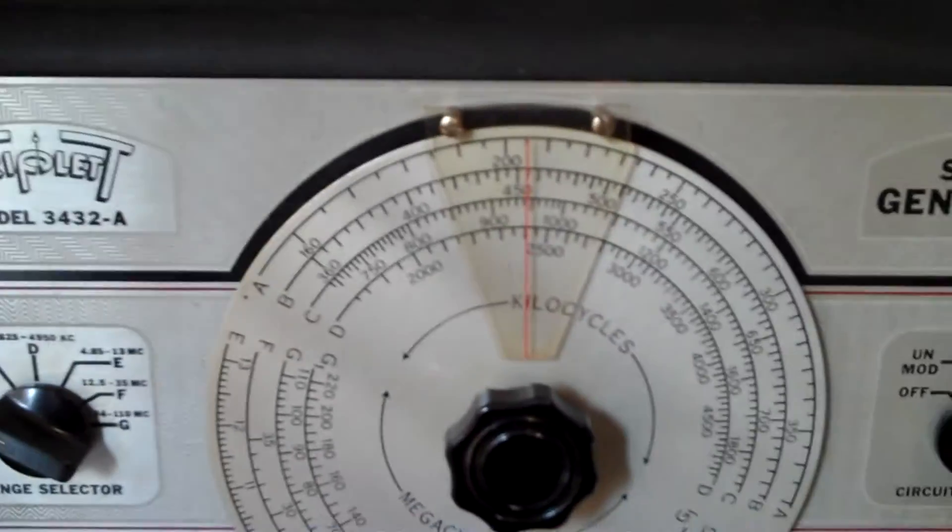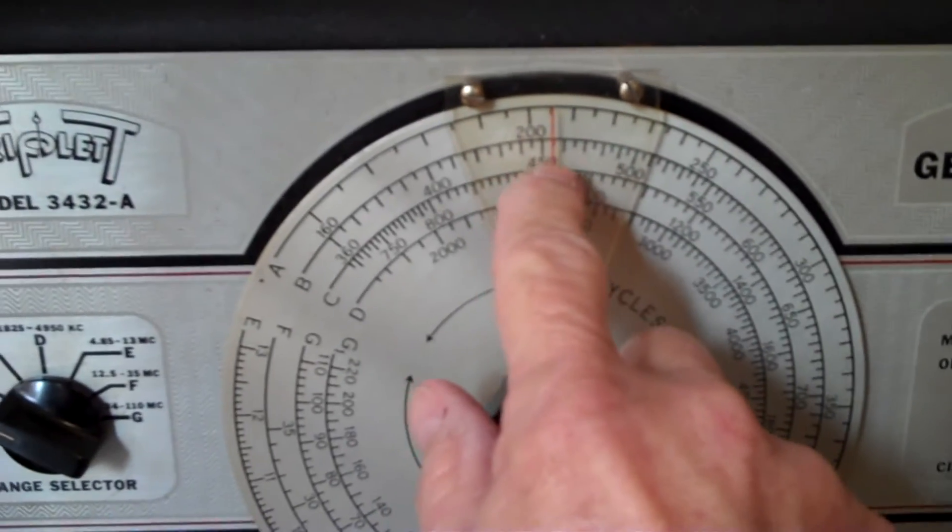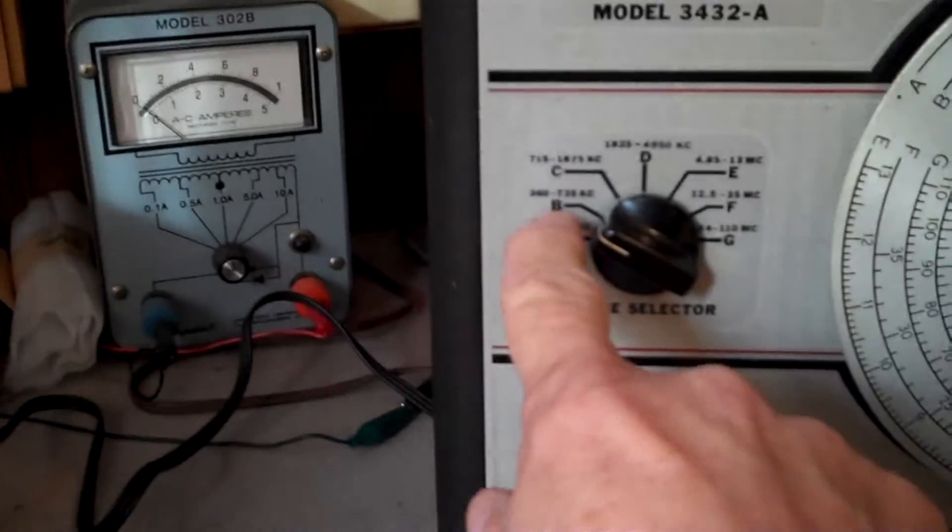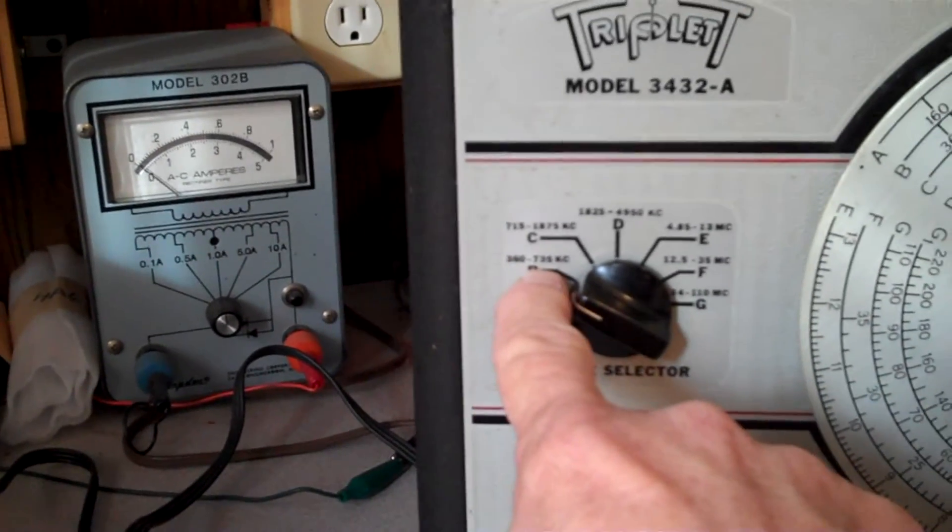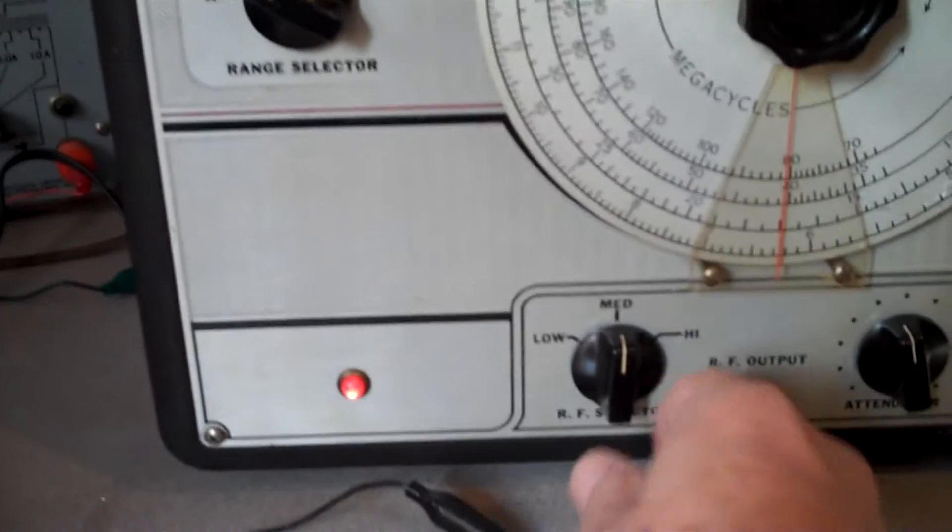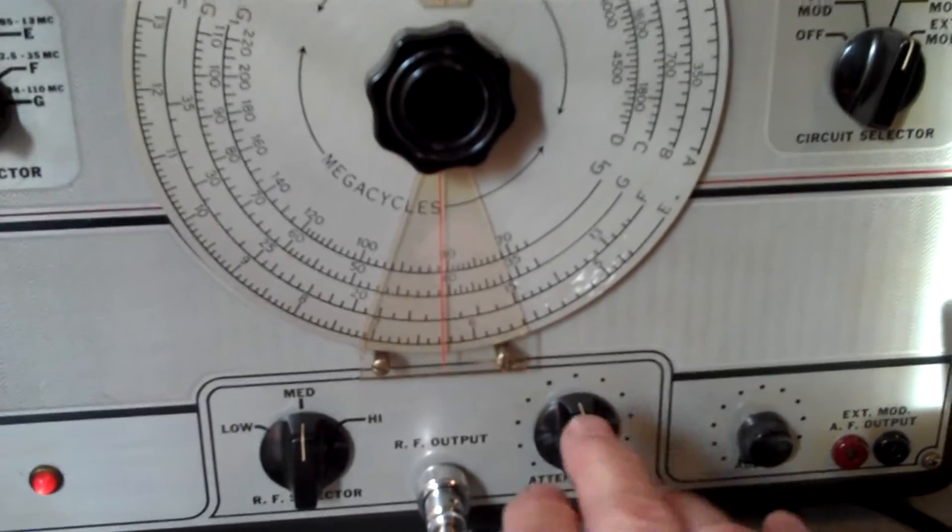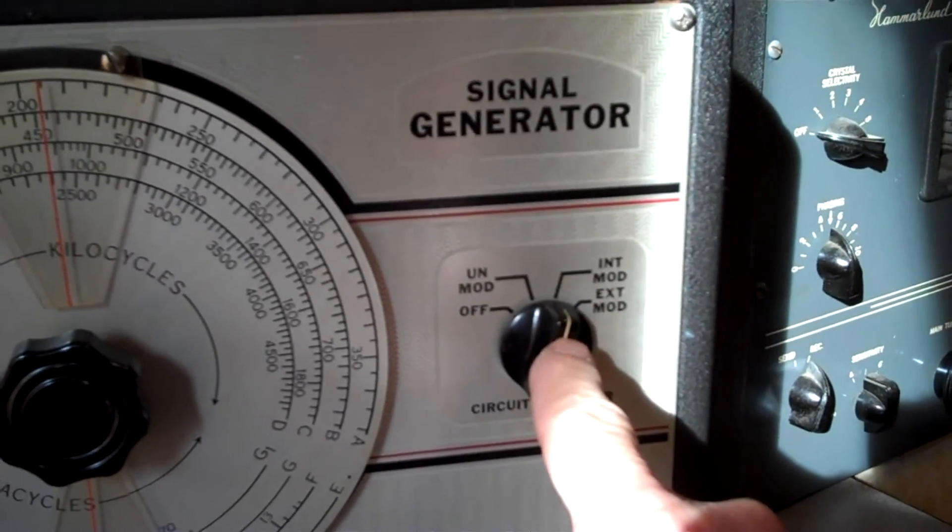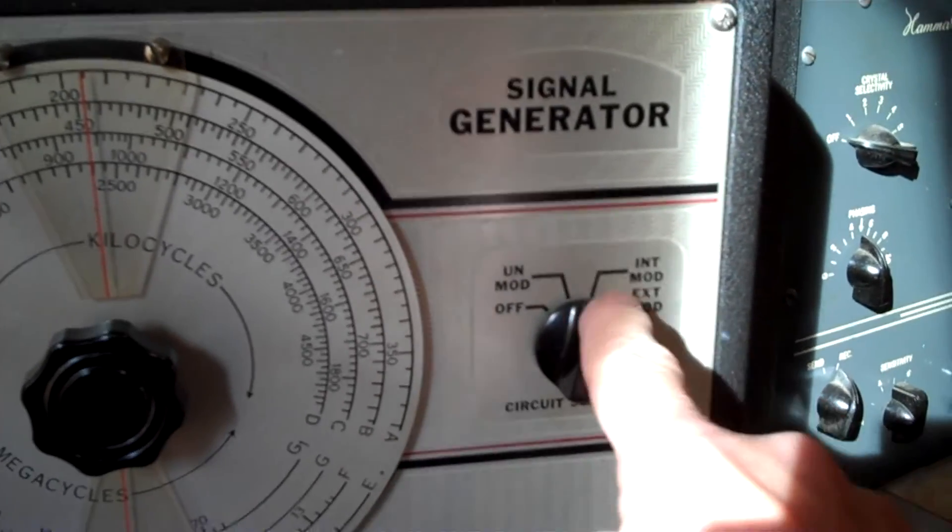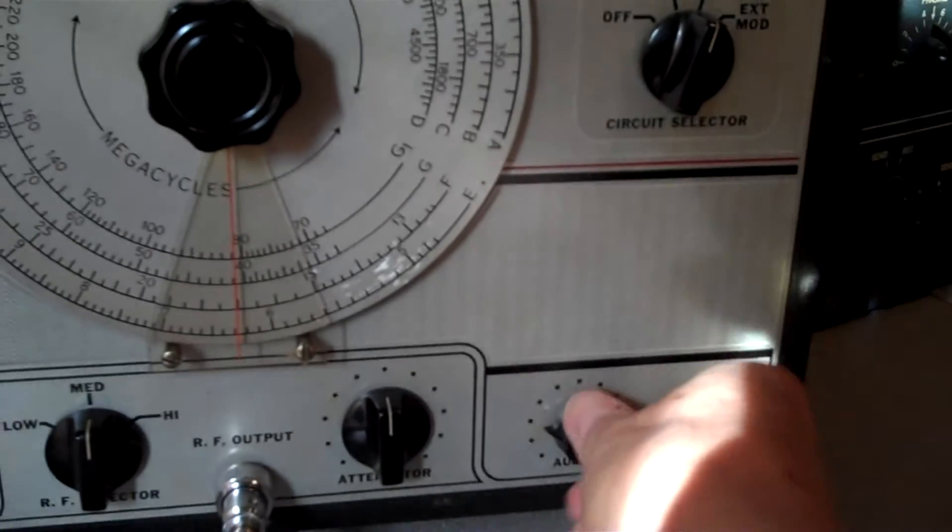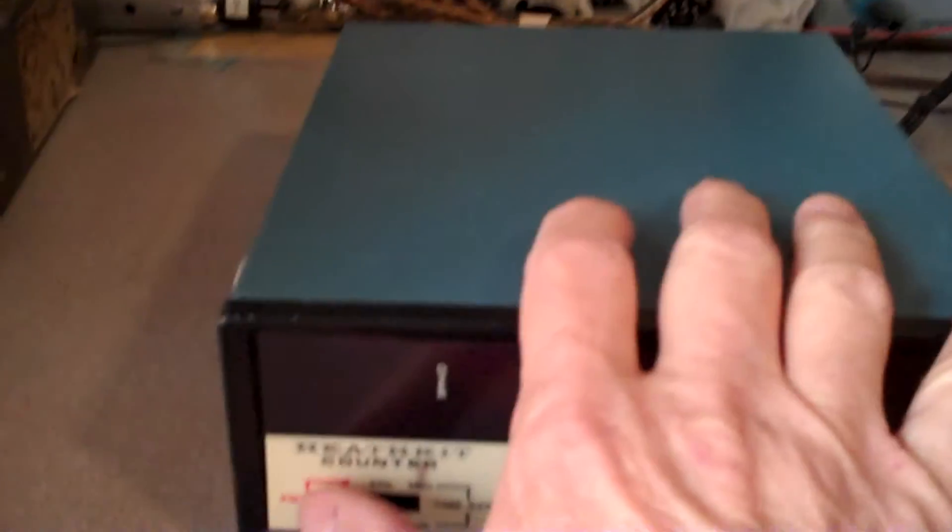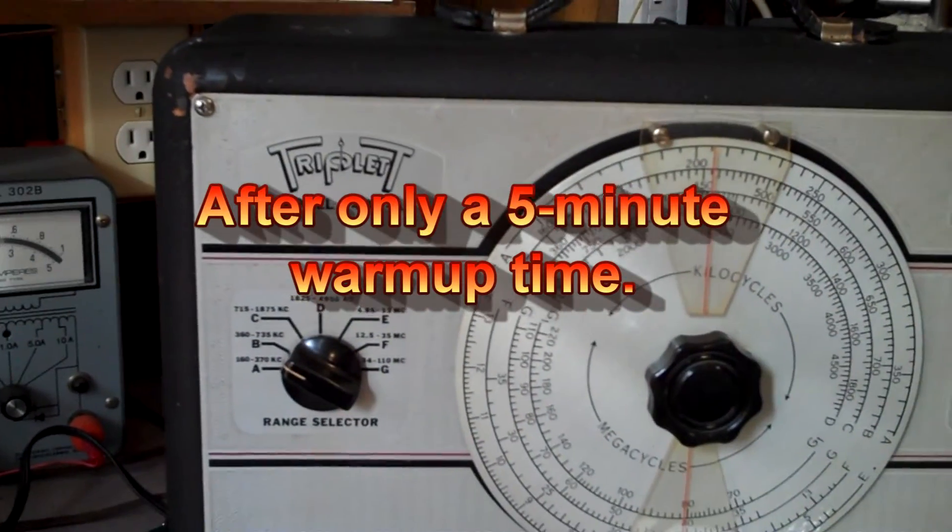All right, I've got this thing set to around 455. I've got it on scale B, which goes from 360 to 735 kilocycles. And I've got it on the medium RF output with the attenuator about halfway. And I've got it set to internal modulation. And then here is the... that doesn't do much right there. That's just an audio signal thing. Right now it won't matter. Okay, so here we go. Let's turn this baby on and see how close to 455 this thing is after I put the new caps in it and fix that bad resistor.